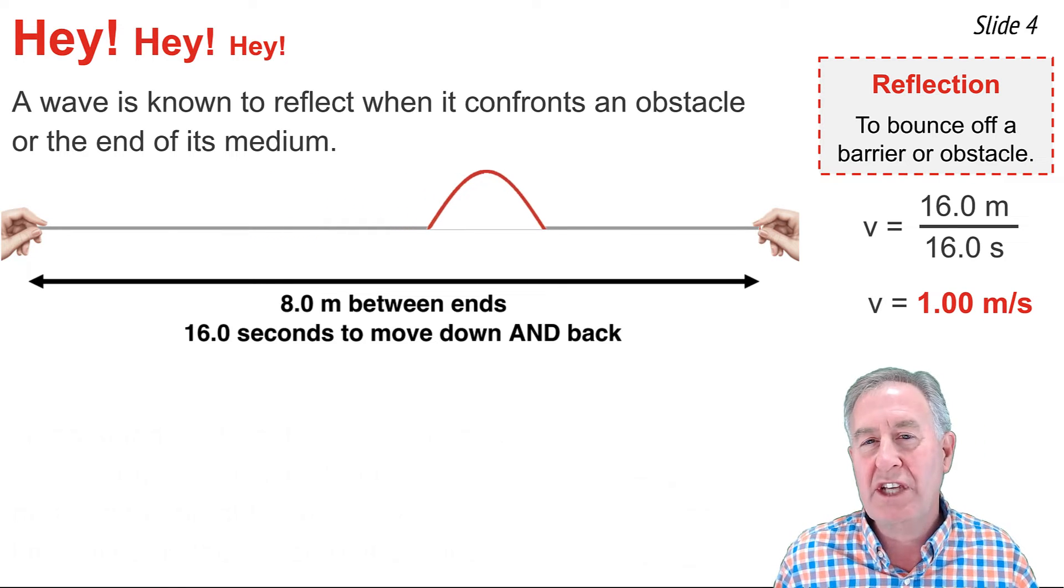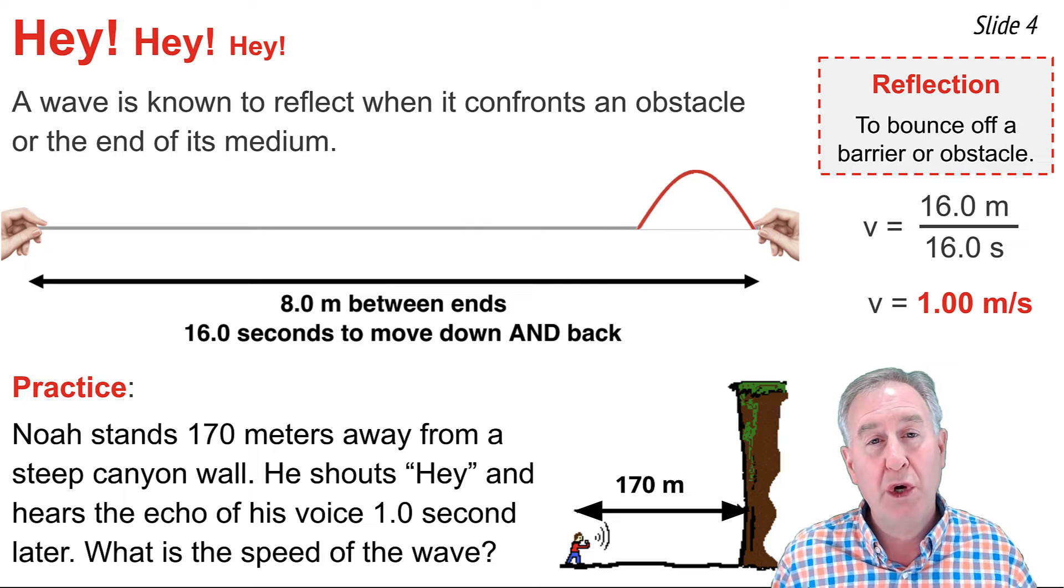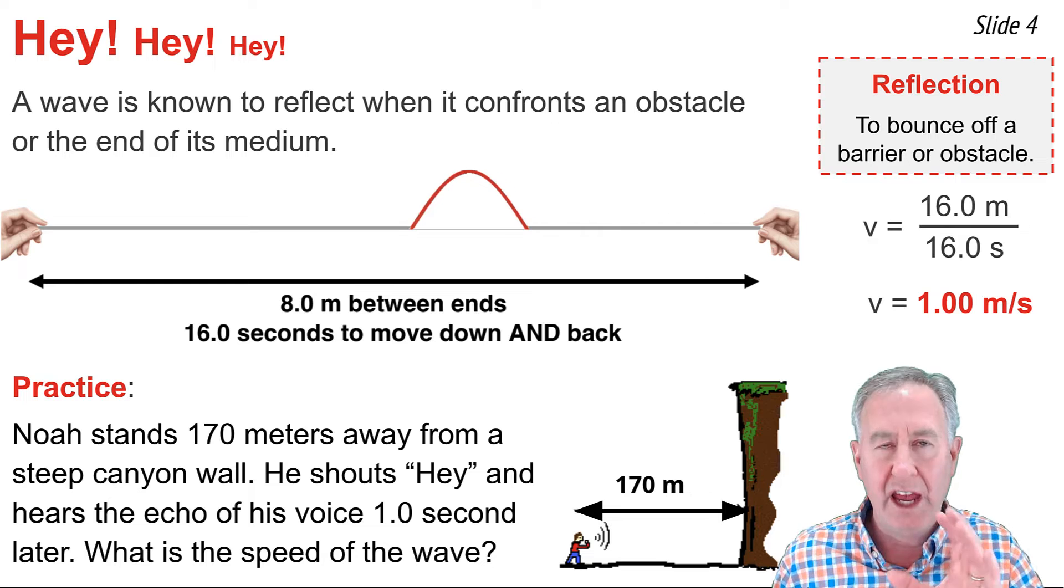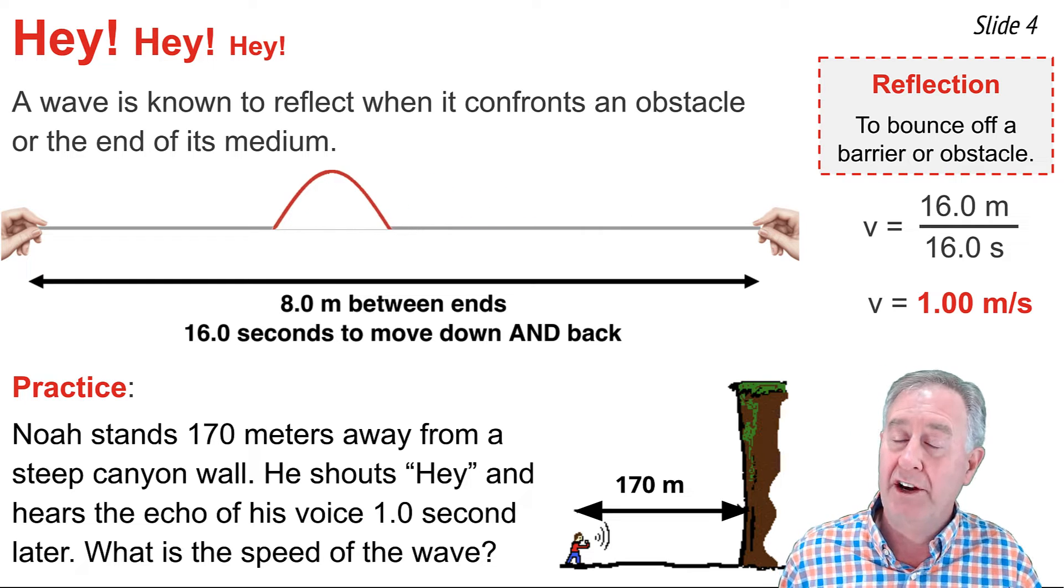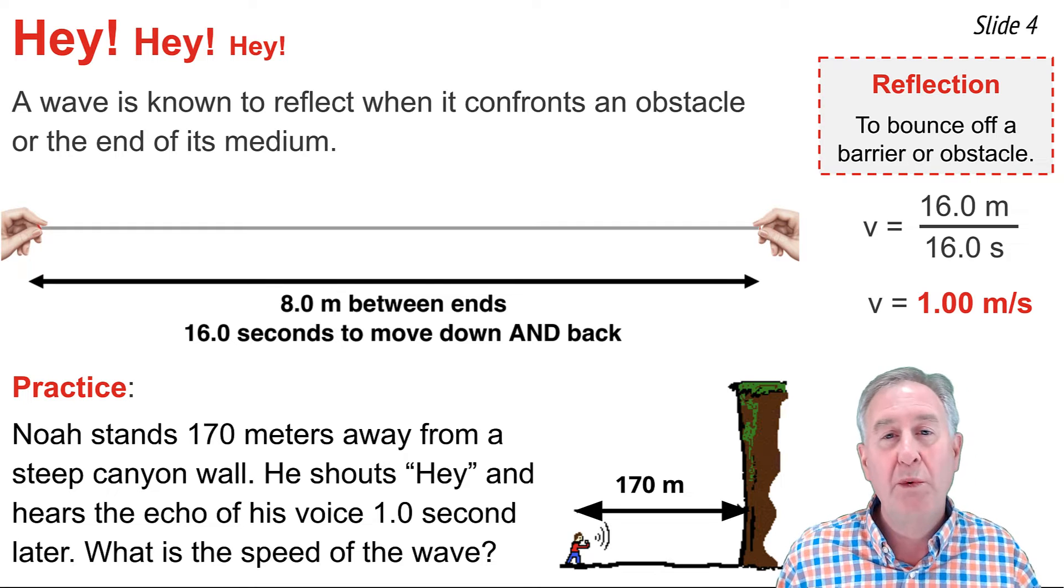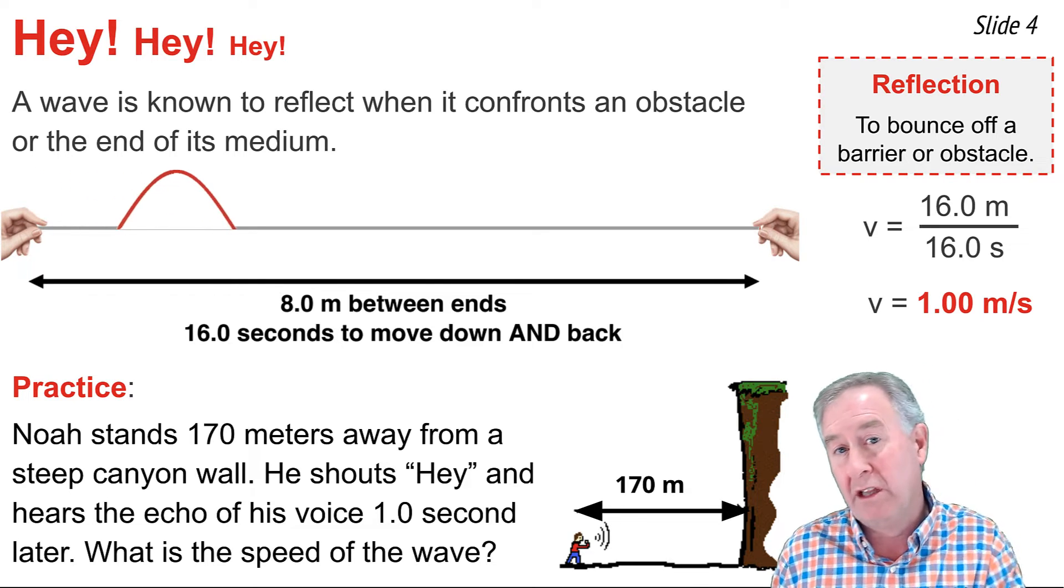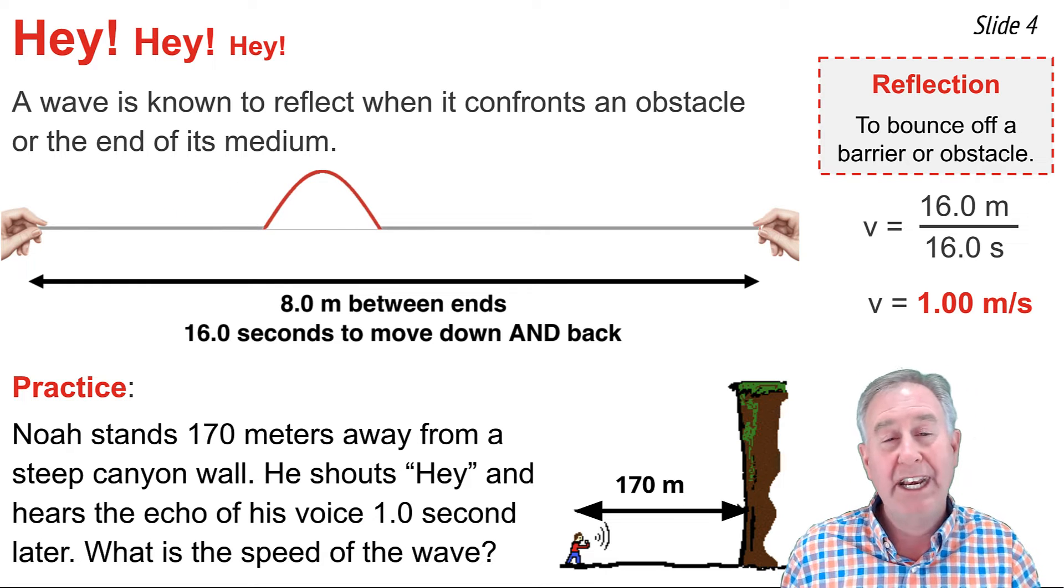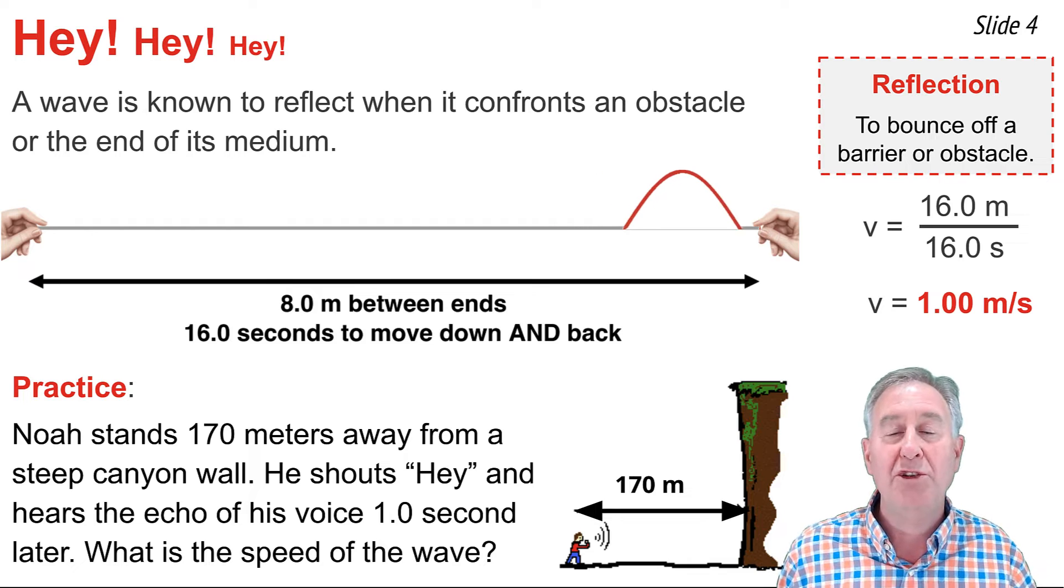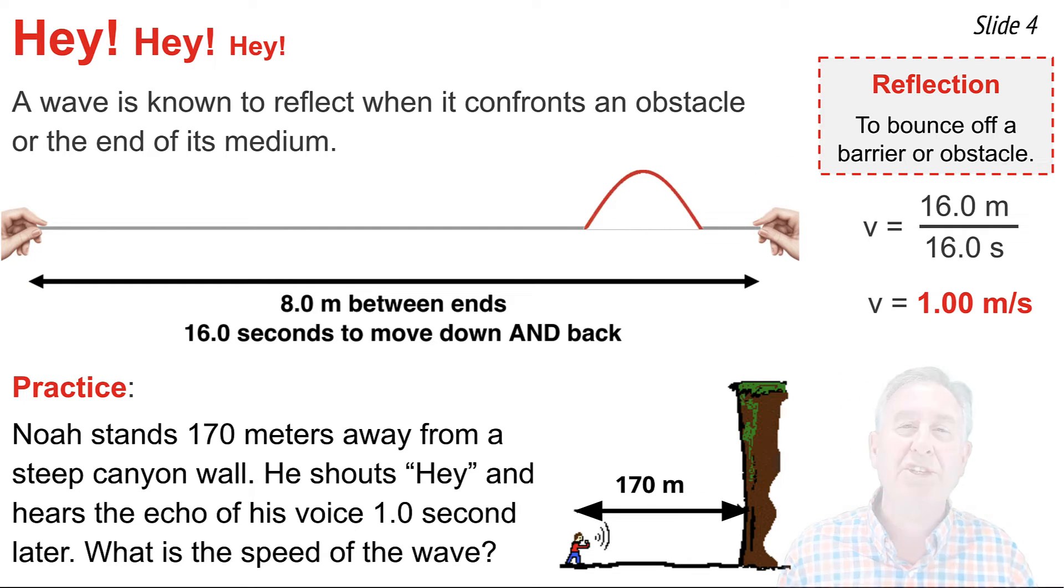When the wave is a sound wave, such as is the situation here, in which Noah stands 170 meters from a steep cliff and yells, hey, and then one second later hears, hey, we have to again be careful to match the distance to the time. The one second is the time it takes for the wave to hit the cliff and return to Noah down and back time. Noah hears the echo, and they have to match that one second to the distance down and back. So I'm going to take the 170 meters and double it to get 340 meters, divide that by one second, and that gives me a speed of 340 meters per second.